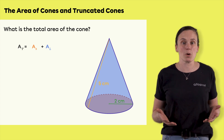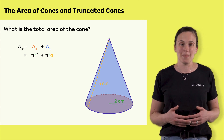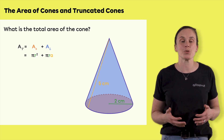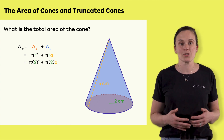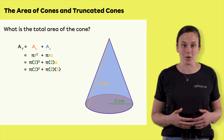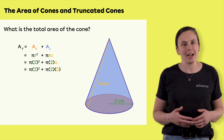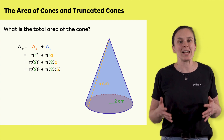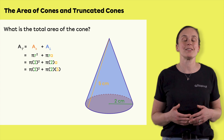Since it is a cone, you replace A_B by pi r squared and A_L by pi r a. Since the radius is two centimeters, you replace all r's with two. The apothem is five centimeters, so you replace a with five. Next, you calculate following the order of operations. You can decide to keep pi for the end of the calculation — this makes the calculations faster and you end up with a more precise answer.